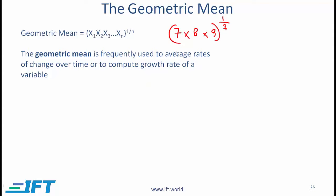Interest rates tell us about the rate of change of money over time. So very often, to compute your average interest rate over a given period, we use the geometric mean — and that is what we did when we computed the time-weighted rate of return in the previous reading.